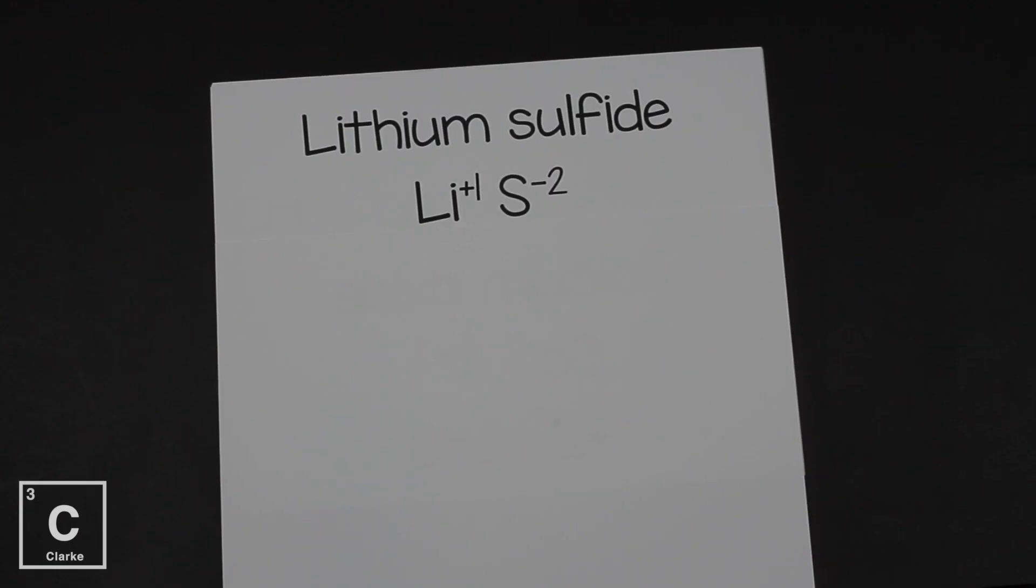So if we write the symbol with their charges, we've got lithium as a plus one cation. Sulfur as a minus two anion. Let's remember, an ionic compound must equal zero. Plus one and minus two, that does not equal zero. That equals minus one. That is not an ionic compound.